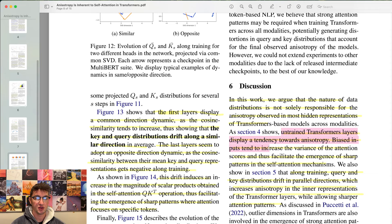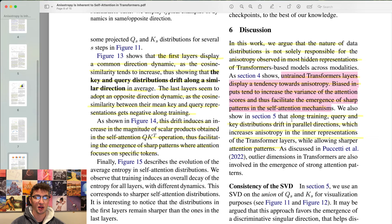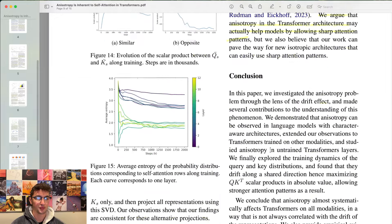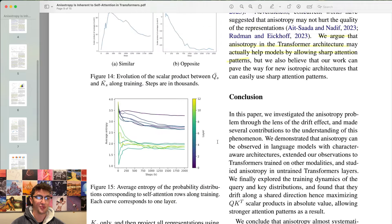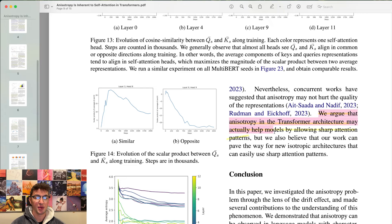In this work, we argue that the nature of data distributions is not solely responsible for the anisotropy observed in most representations of transformers. Untrained transformers layers display a tendency towards anisotropy. Biased inputs tend to increase the variance of the attention scores and thus facilitate the emergence of sharp patterns in the self-attention mechanisms. Along training, query and key distributions drift in parallel directions, which increases anisotropy in the inner representations of the transformer layers, allowing sharper attention patterns. Even though anisotropy has not been shown to be an issue in language modeling, previous works have advocated that removing anisotropy in output representations leads to better sense disambiguation abilities. We argue that anisotropy in the transformer architecture may actually help models by allowing sharp attention patterns.